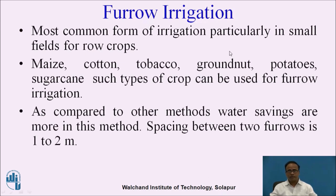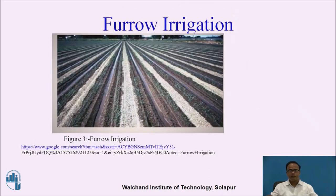Furrow irrigation is the most common form of irrigation for row crops such as maize, cotton, tobacco, groundnut, potatoes, and sugarcane. Compared to border irrigation or basin irrigation, water savings are greater in this method. The spacing between two furrows is 1 to 2 meters. A typical photograph shows the row crops spaced about 1 to 2 meters apart, making this a popular method of irrigation.